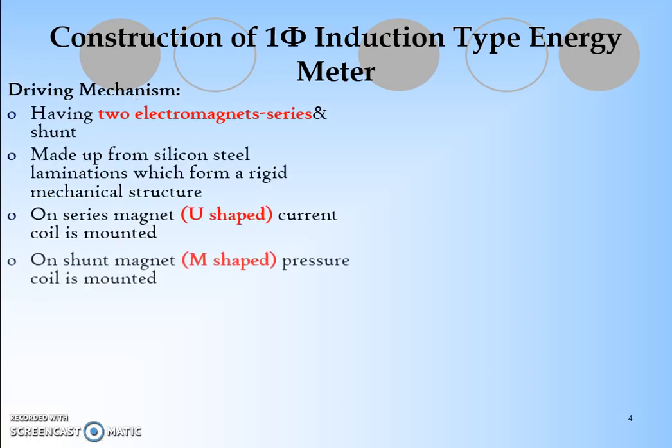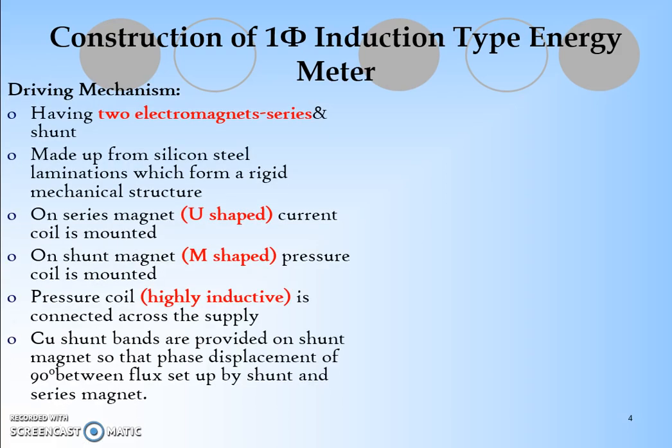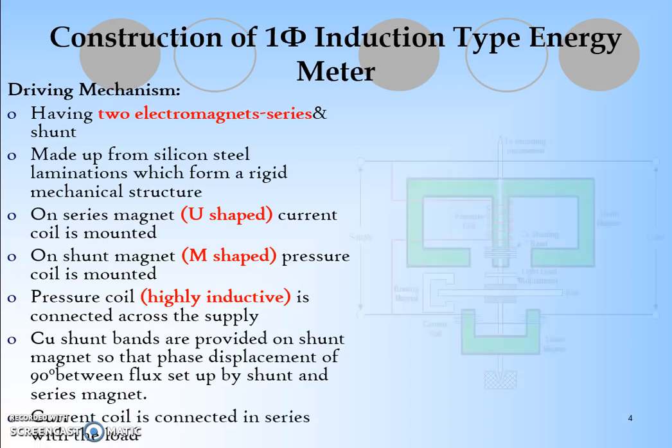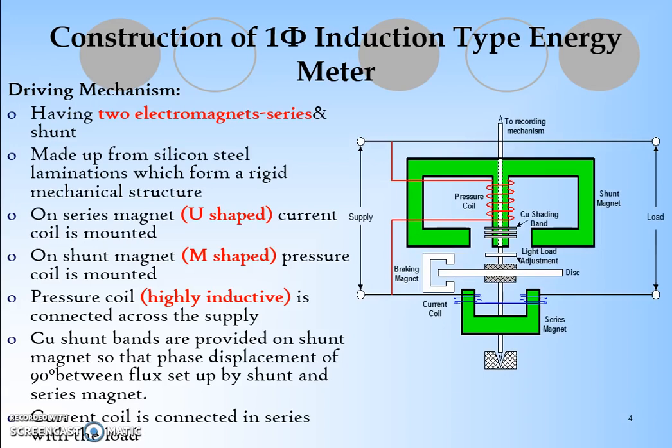The first and very important part is the driving mechanism. How does the particular disc rotate? It is based upon this driving mechanism magnets. It has two electromagnets: one is the series connected magnet and another is the shunt connected magnet.